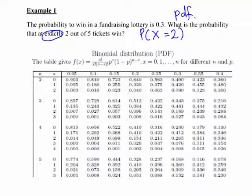So we're going to be using the binomial PDF tables like the one shown here. Now let's look at the parameters. We want 2 out of 5 tickets, so n equals 5 is the total number of trials. And we're also told the probability to win in the lottery is 0.3, so that's p, the probability of success.